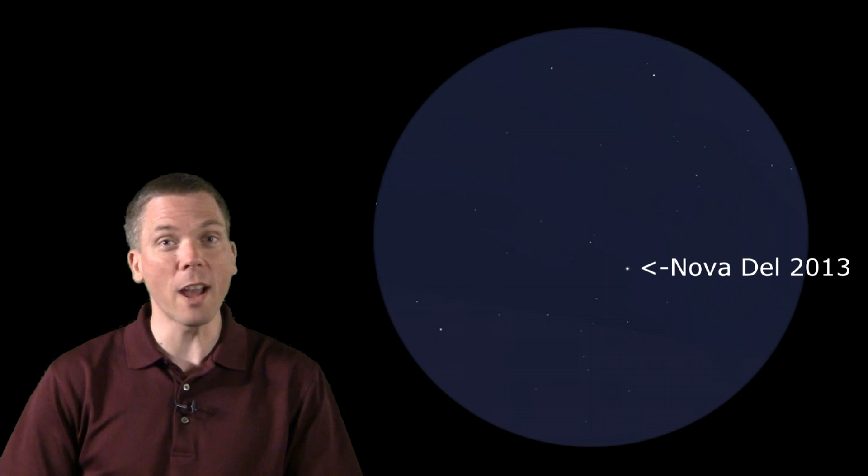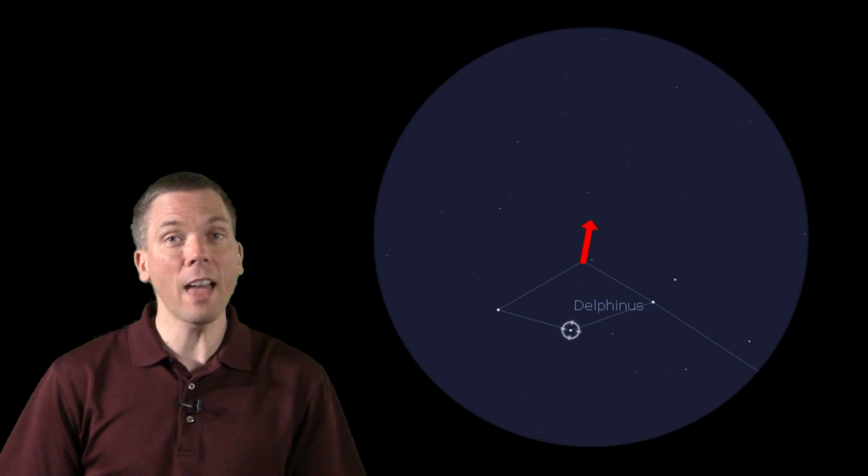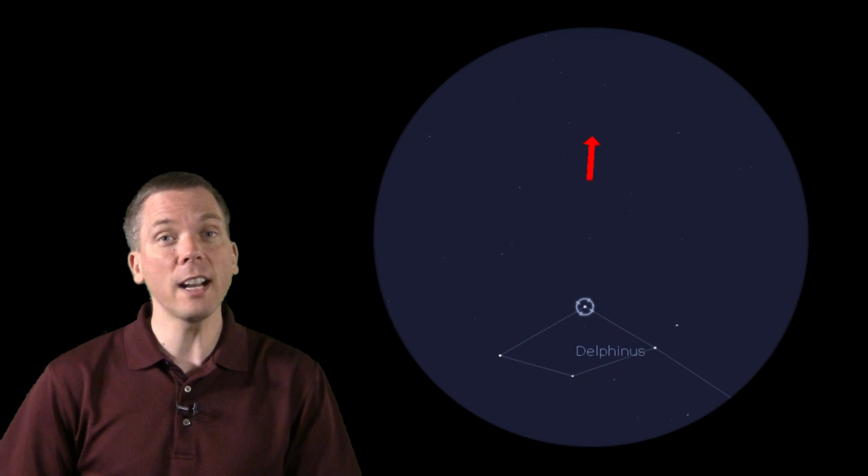Remember, this will be correct orientation in binoculars, but likely reversed in a finderscope, unless you have a correct image style finder. The other way to find the nova is from Delphinus. If you can see that constellation under your skies, look for the diamond shape in the dolphin constellation, draw a line through these two stars, and move that way about 6 degrees from Alpha Delphini to find our other, slightly dimmer diamond, and there you go.